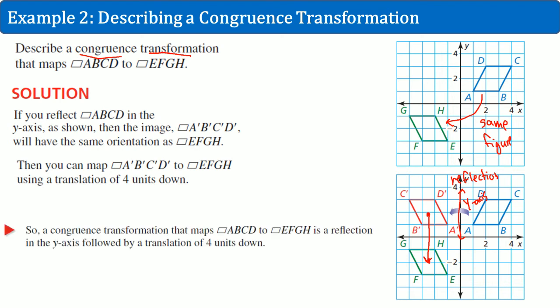So we could say that a congruent transformation, which was the reflection, then the translation, maps the rectangle ABCD to rectangle EFGH by reflection about the Y-axis followed by a translation. This is how you describe a congruent transformation.